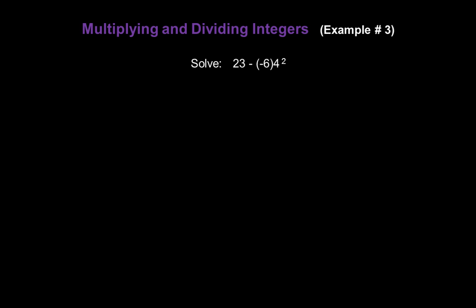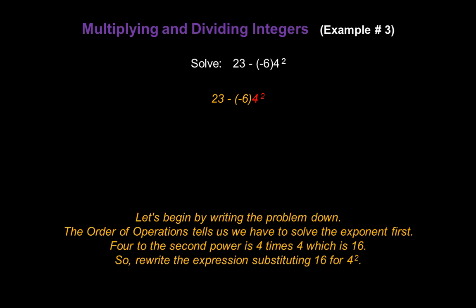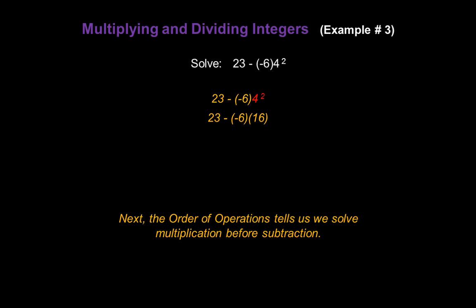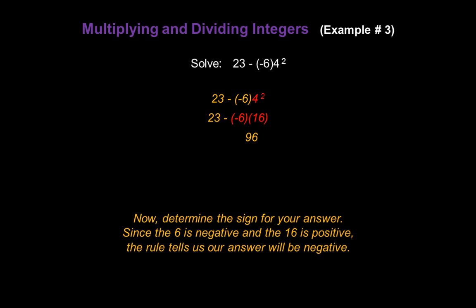Now let's solve 23 minus negative 6 times 4 to the second power. The order of operations tells us to solve the exponent first. 4 to the second power is 4 times 4, which is 16. Rewrite the expression substituting 16 for 4 squared: we have 23 minus negative 6 times 16. Next, the order of operations tells us to solve multiplication before subtraction. So we look at negative 6 times 16. Ignore the signs — 6 times 16 gives us 96. Since the 6 is negative and the 16 is positive, the rule tells us our answer will be negative 96.